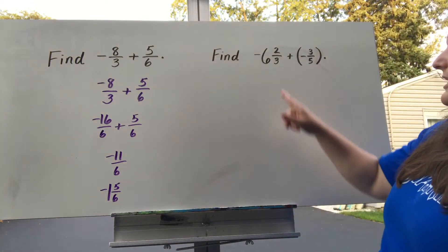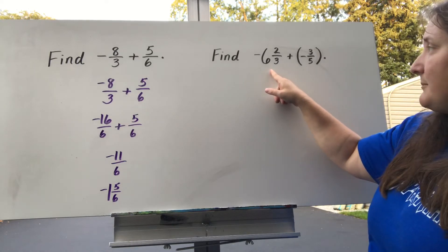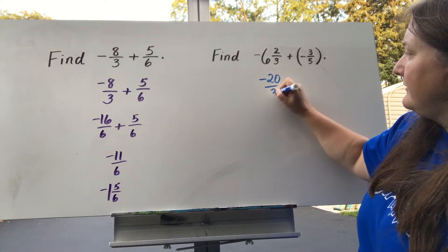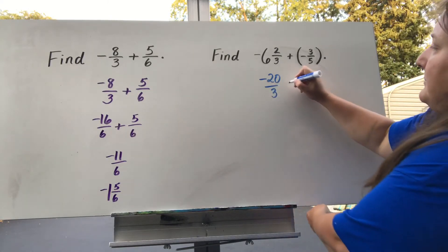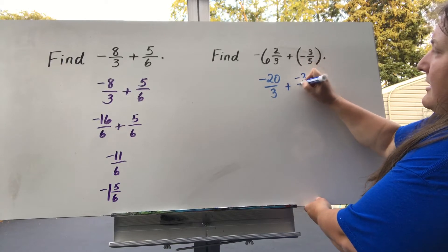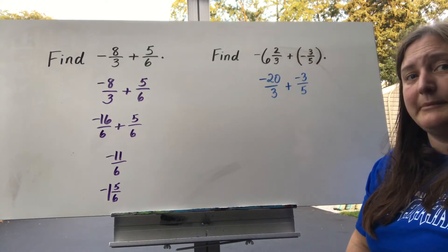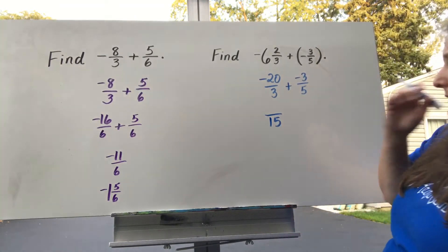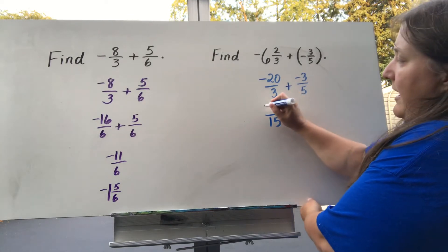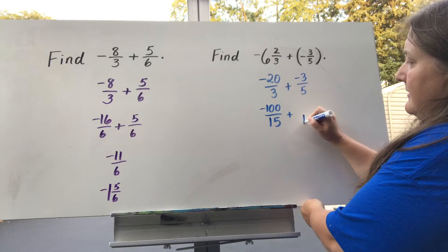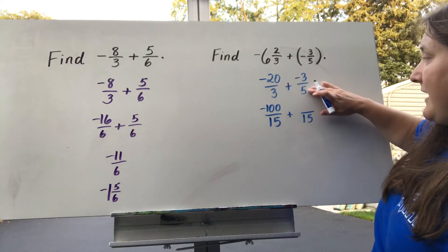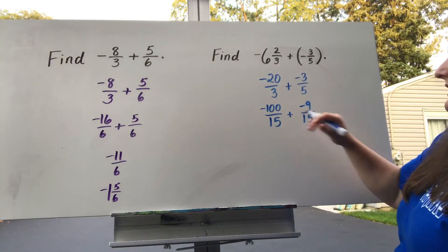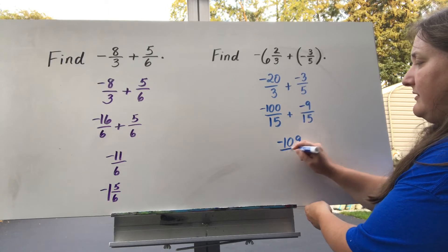Let's try another one. This time I'm starting with a fraction in mixed number form, so I'm going to change it to an improper fraction. This becomes negative 20 thirds, and I'm putting that negative up with my numerator. Plus, I'm also putting the negative with the numerator on the second fraction: negative 3 fifths. For the common denominator, 3 and 5 have a common denominator of 15. So 3 times 5 gives me 15, and negative 20 times 5 gives me negative 100. For the second fraction, 5 times 3 gives me 15, and negative 3 times 3 gives me negative 9.